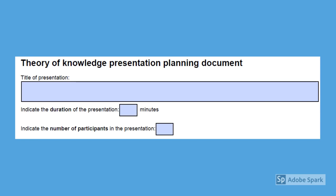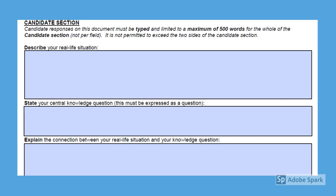The planning document follows the format of the presentation already discussed in this video as well as the rubric. You start here with the basic information. You can only write 500 words for the whole of the document. Pay close attention to the command terms: describe your real life situation, state your knowledge question, and explain the connection between them.